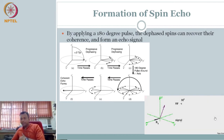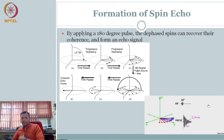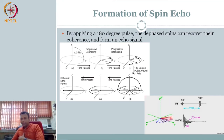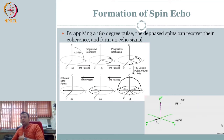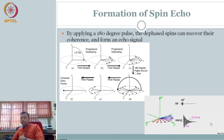But it will start to dephase again because you have switched off the excitation pulse. So the 180-degree excitation pulse makes it come together, and then it goes down and starts to dephase again. So again this will start to decay. This is the signal — and what you are going to get is an echo of the signal. So when you apply 180 degrees, you get an echo of the signal.